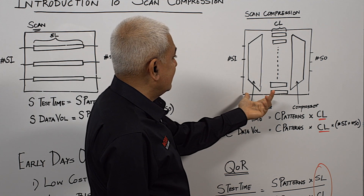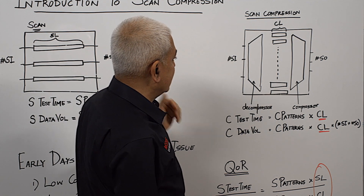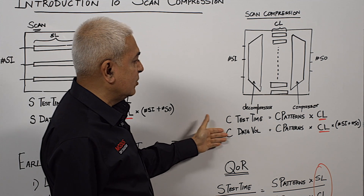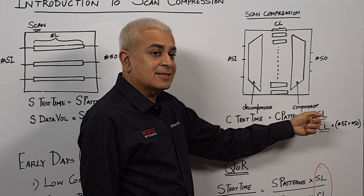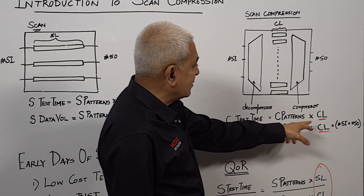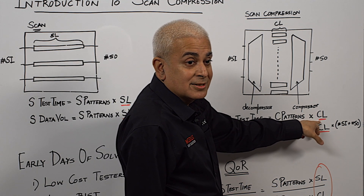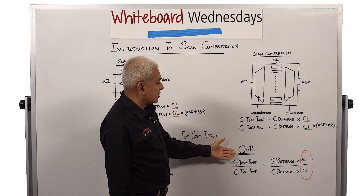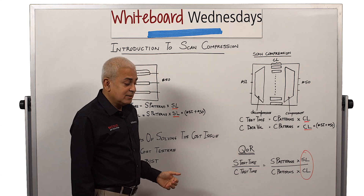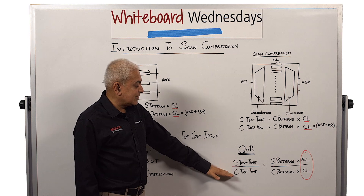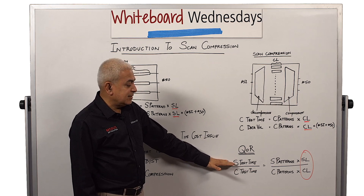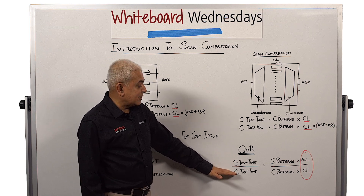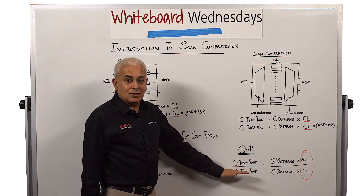When test patterns are streaming in, just like with scan, you have the same shift operation and a capture operation. The test time equations look the same — it's basically the compressed patterns times the compressed chain lengths. Now if the chain length is reduced by 50 times, you're expecting to get 50x compression. So that is what scan compression is all about.